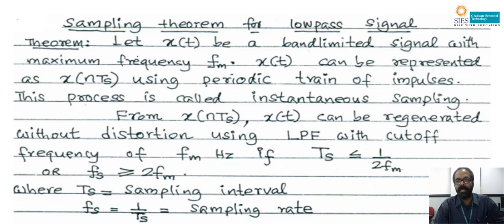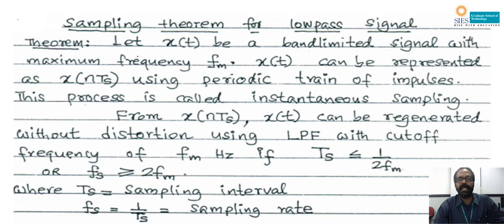Theoretically, this is going to be implemented using a periodic train of impulses. This process is called instantaneous sampling. If you are using a periodic train of impulses, the sampling is known as instantaneous sampling. Instead of that, practically a periodic train of pulses is used. The reason is that when the switch is going to be closed, it cannot be closed for zero seconds — it will take some finite time. Due to that reason, instead of getting an instantaneous sampled signal, we practically get a pulse amplitude modulated (PAM) signal.